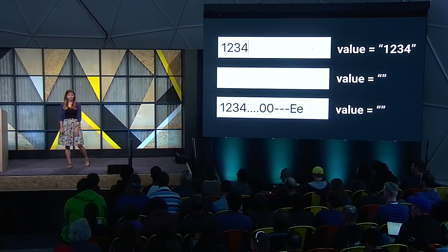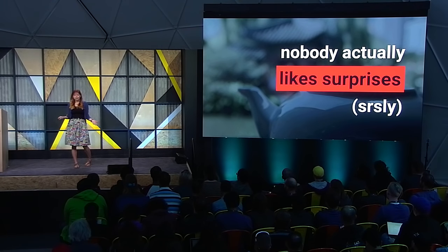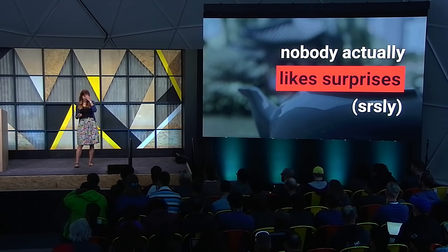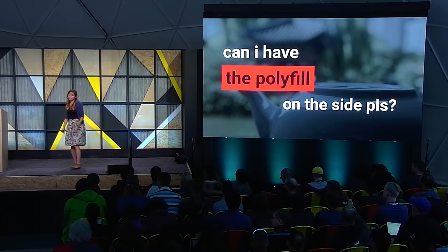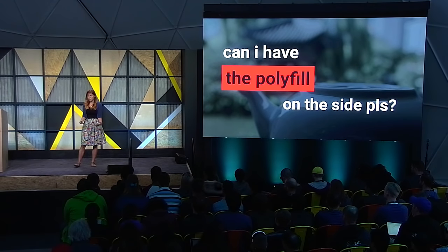Never be input, because nobody really likes surprises. Surprises in an API are the worst — they're like finding your cake is made out of kale and not cake. The reason we painted ourselves into a corner with input is because in 1995 we didn't have polyfills and had to jam everything into one object. But now we have polyfills, so we need to deal with them properly.